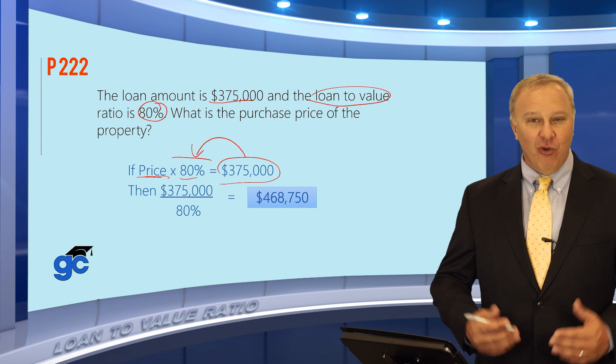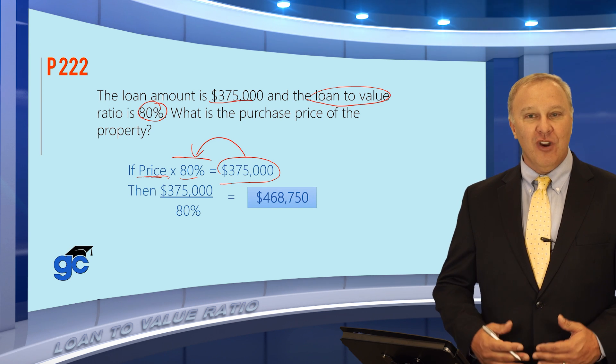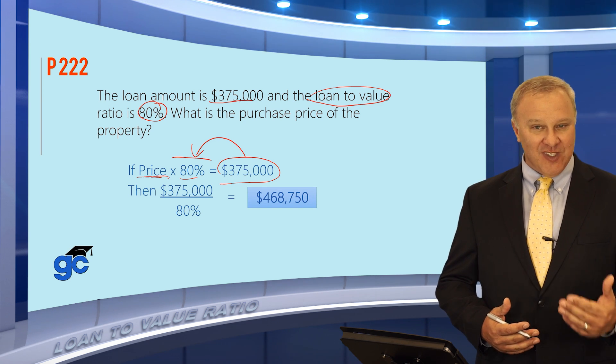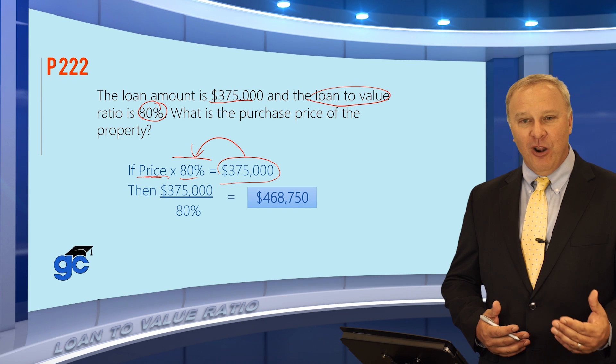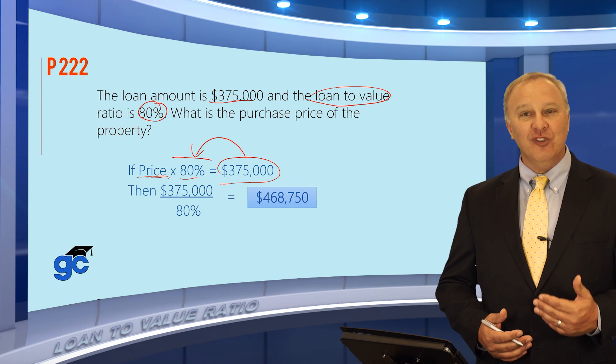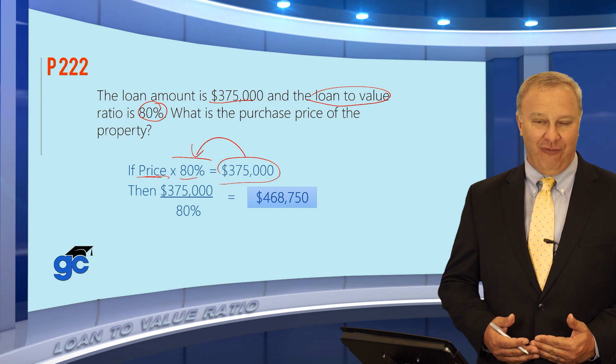Remember the loan-to-value ratio: if by chance you're given both a sales price and an appraised value, you would always use the lower of the two.